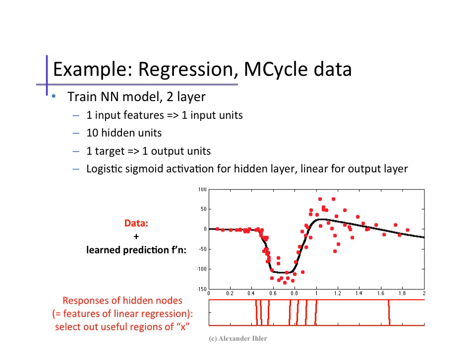As a simple example of what a neural network regression model might look like, here's a two-layer model trained on data from the UCI repository — the motorcycle dataset. The model consists of one hidden layer with 10 nodes with logistic sigma activation functions, followed by an output layer with a linear activation for regression. After training, the hidden node activations are plotted at the bottom. You can see that they act to segment the original feature space x into different regions, effectively acting like step function detectors. A linear combination of these hidden node values can produce a highly nonlinear output function in the original feature space x.